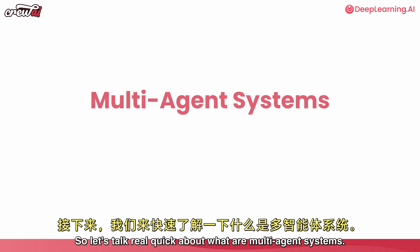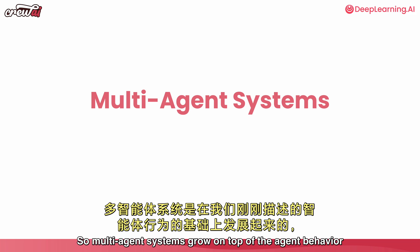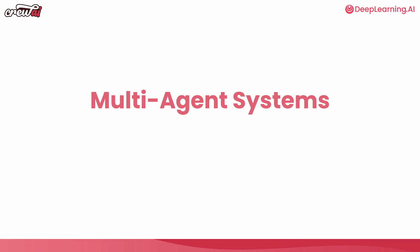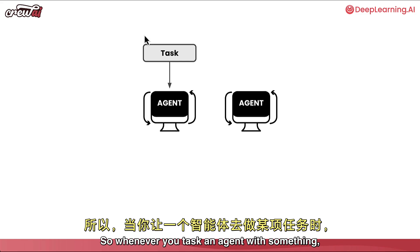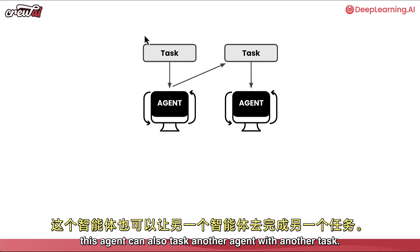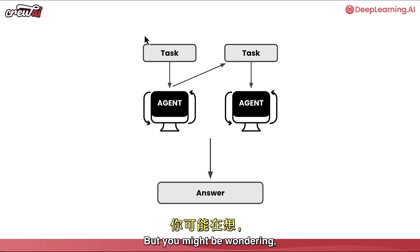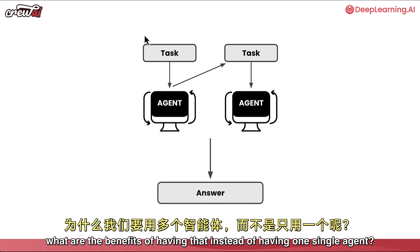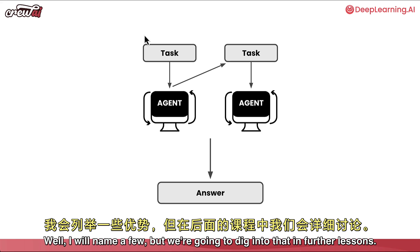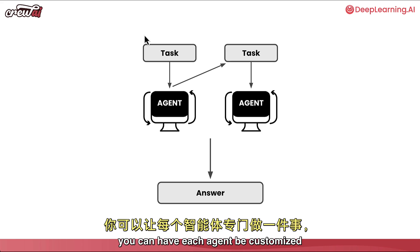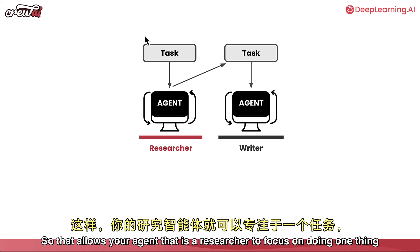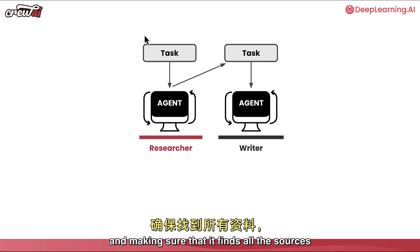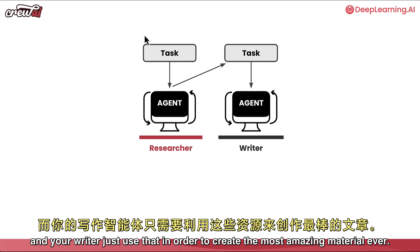Multi-agent systems grow on top of that agent behavior. Instead of having just one agent, you can have multiple of them - when you task one agent, it can also task another agent with a subtask, and in the end you get one single final answer. The benefits include having each agent customized to do one single thing and do it well. For example, you can have one agent be a researcher and another be a writer, so the researcher focuses on finding and checking all the sources, while the writer uses that to create amazing material.